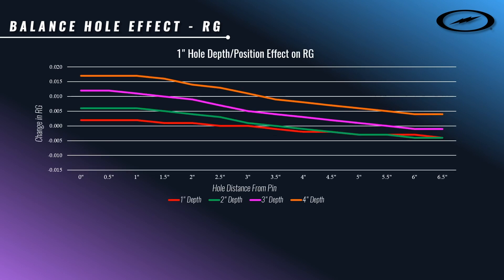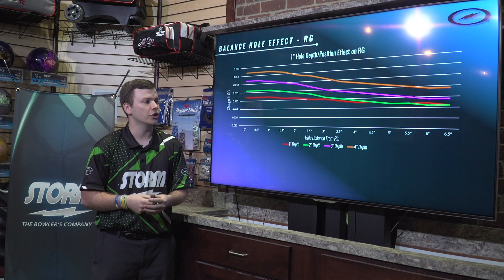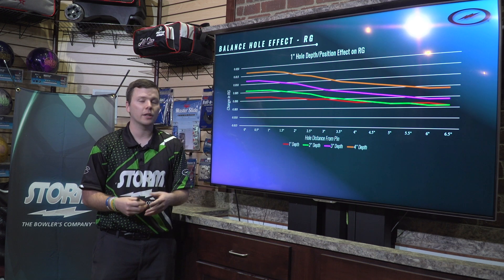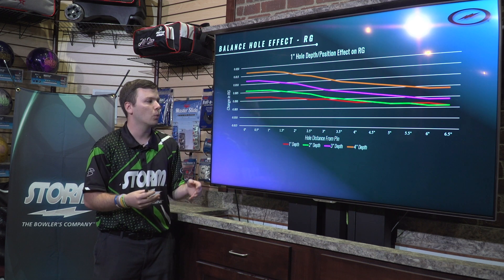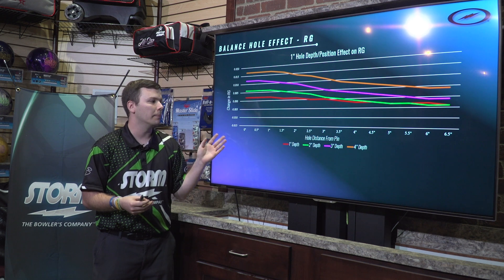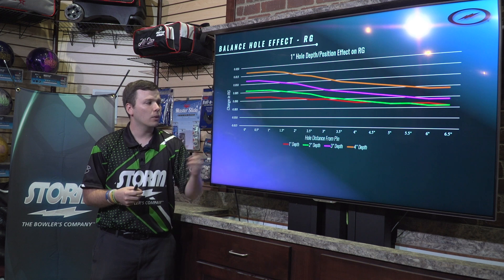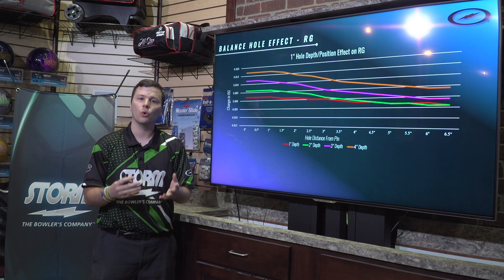First up we're going to take a look at a graph and start with RG. We know that there's RG, total differential, and intermediate differential. We're starting with RG. This graph may look a little bit confusing at first, but let's break it down one element at a time.